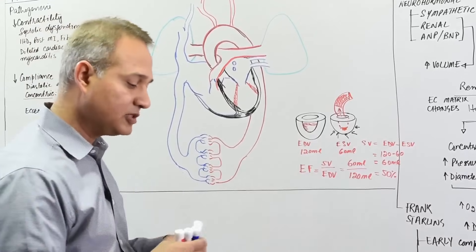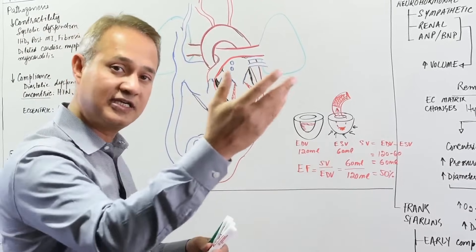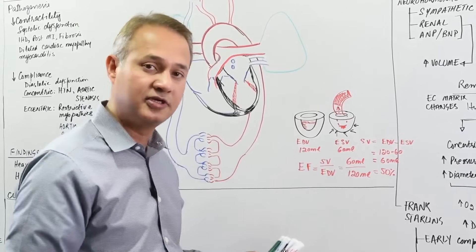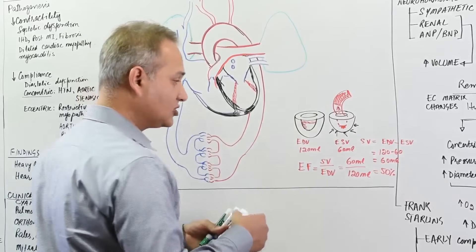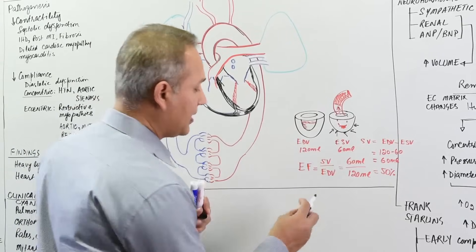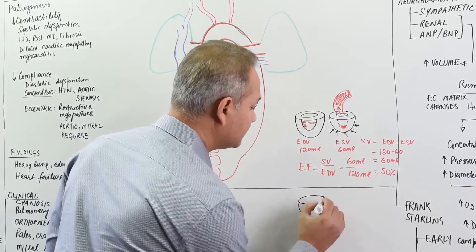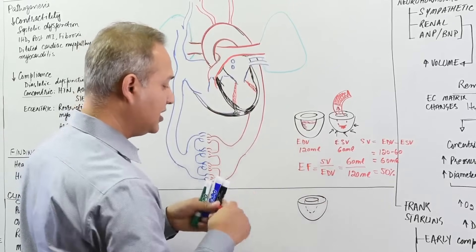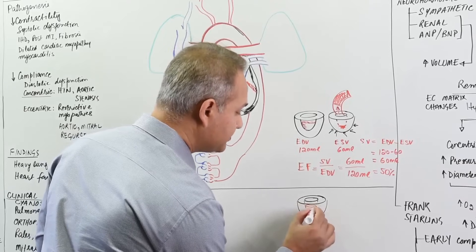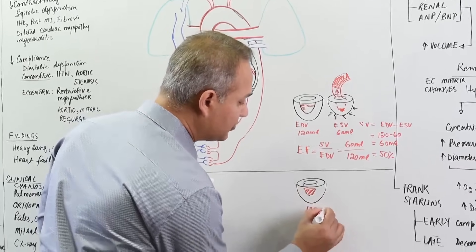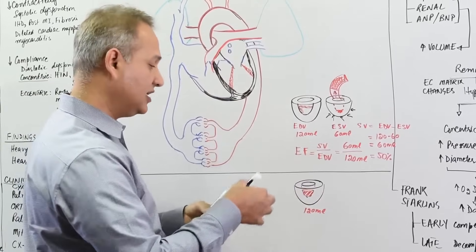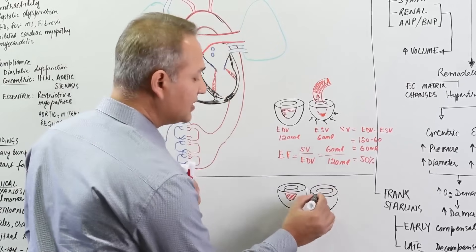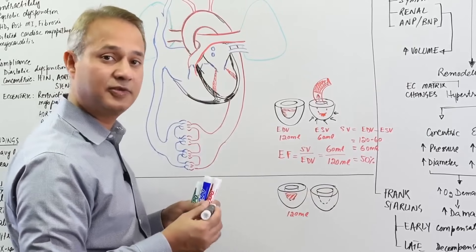Now let us look at systolic dysfunction. Systolic dysfunction means when the heart was squeezing, it was not able to eject properly, so cardiac output is reduced — the heart is failing and cannot nourish the tissues. Let's say this heart has 120 milliliters of blood, same as the normal, and it undergoes systole but is damaged — for example, due to ischemic heart disease.